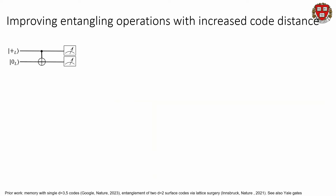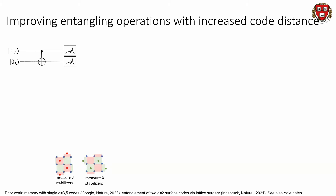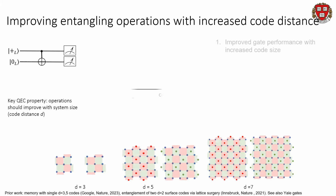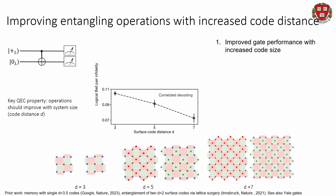We can also study entangling operations between these logical qubits and how well they perform. We prepare two copies of surface codes by doing a single round of stabilizer measurements, move our ancillas away to the side, then do our transversal entangling gate between these surface codes. A really important property of quantum error correction is that we want to see operations improve as we increase the size of the code. Here we study this going from distance 3 to distance 5 to distance 7. As we increase the size of the code, the error on the Bell pair we create goes down.